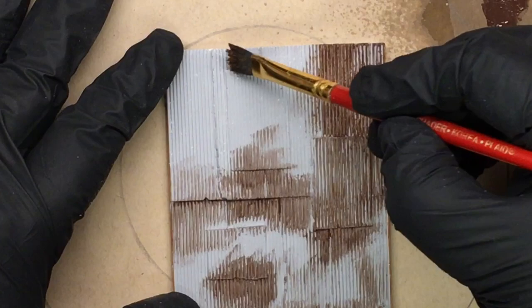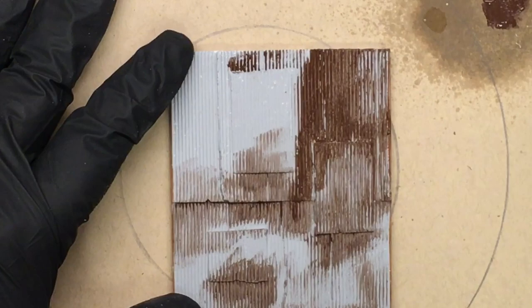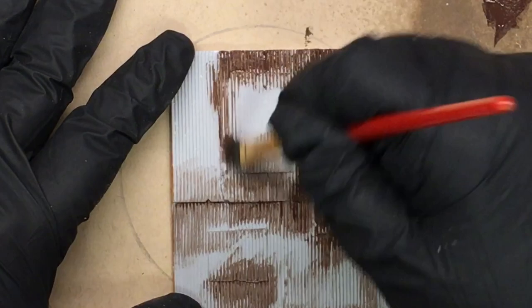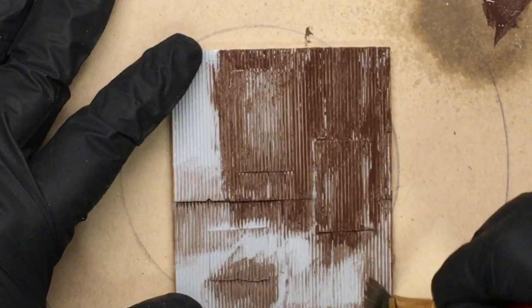And what you can also do is you can take some water and spray the casting itself and then paint, which helps it to go on even smoother. But again, the object of this is not to paint it a solid brown. If you wanted a solid brown, you could just spray it with a brown colored paint.